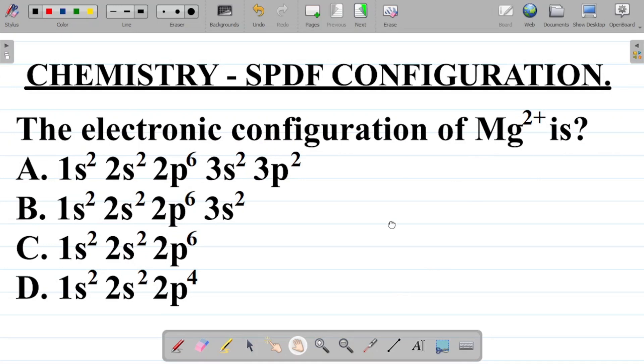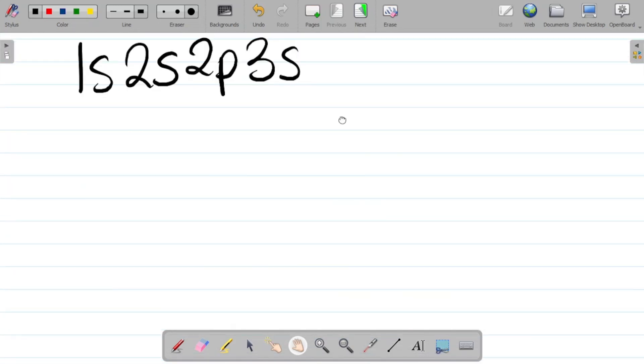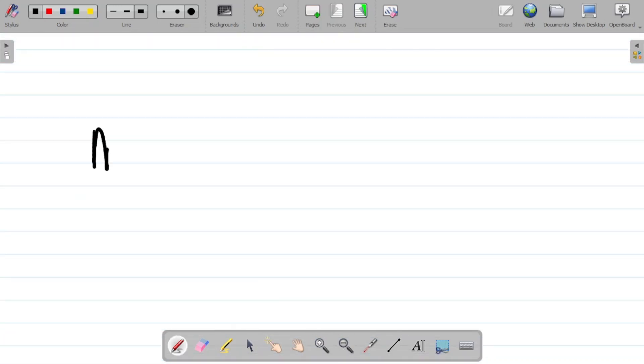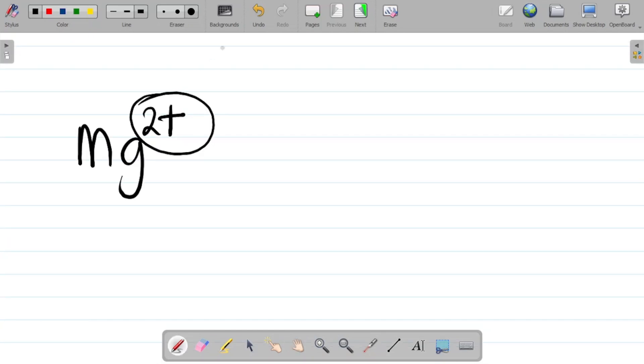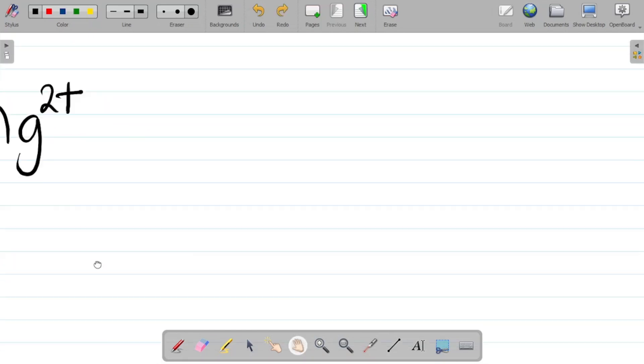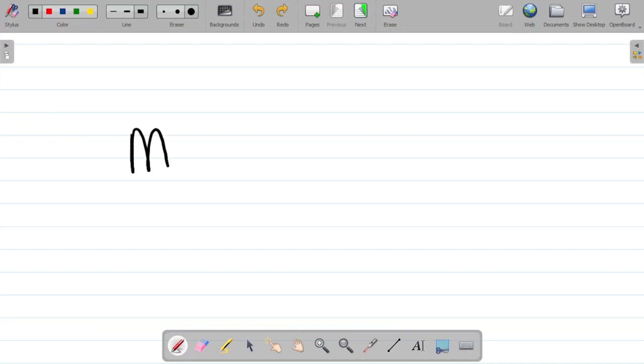Now for this, how do we solve this question? Given magnesium, Mg²⁺. First, let's ignore the ion. Let's take a normal magnesium atom. For a normal magnesium atom, the atomic number of magnesium is 12, and when this is 12, it means that the number of electrons is also 12.